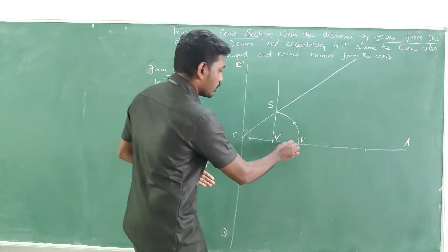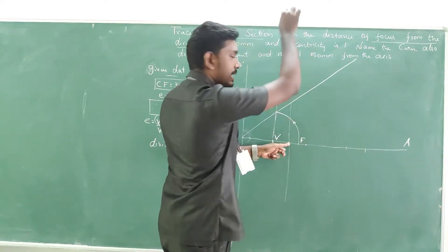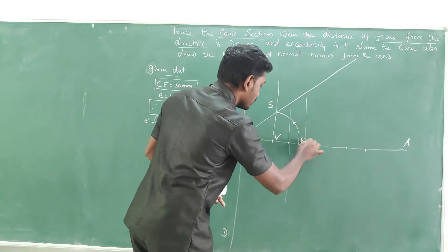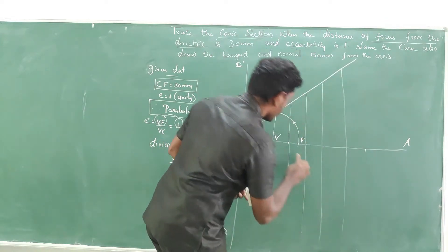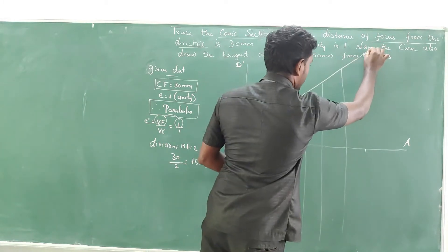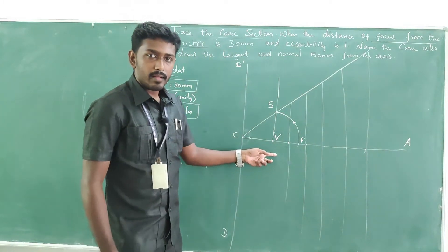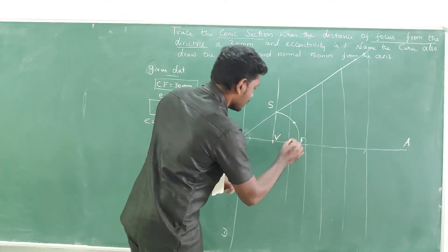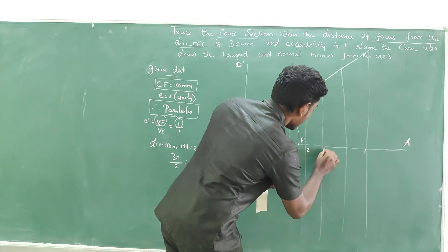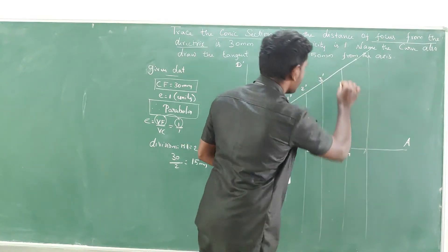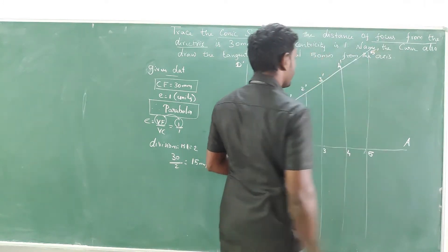Take the points and go for 90-degree lines with respect to the axis. The separations go like this: 1, 2, 3, 4, and 5. Denote them as 1-1', 2-2', 3-3', 4-4', and 5-5'.